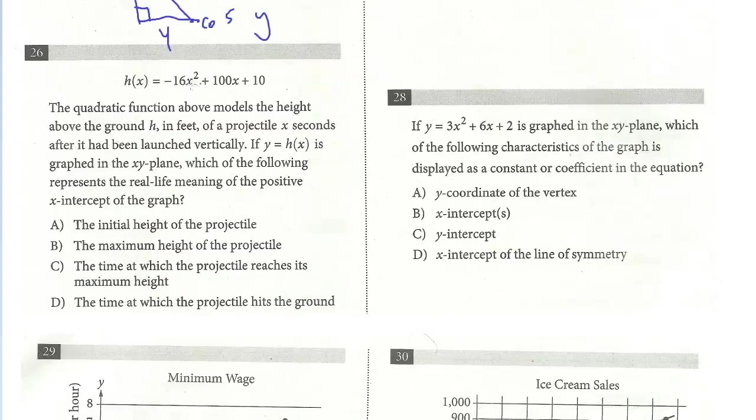All right, let's take a look at number 26. The quadratic function above models the height above the ground h in feet of a projectile x seconds after it's been launched vertically. If y equals h of x is graphed in the xy plane, which of the following represents the real life meaning of the positive x-intercept of the graph. This is another common question. And this is what I call a physics-type question where we have a parabola and it's applied to a real-life situation.